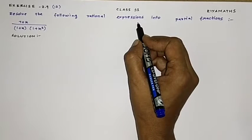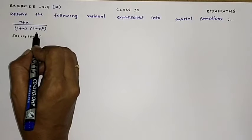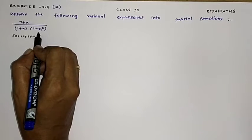Resolve the following rational expression into partial fractions: (7 + X) divided by (1 + X)(1 + X²).